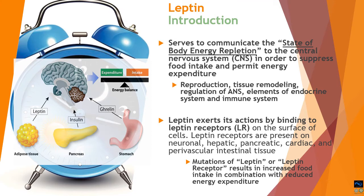If there is a mutation in leptin or the leptin receptor, that will result in increased food intake in combination with reduced energy expenditure, causing dysregulation of energy regulation. In extreme cases this can lead to obesity or anorexia.